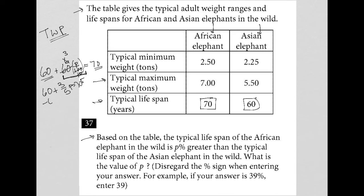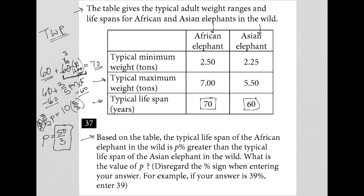I can then subtract 60 from both sides of this equation, leaving me with 3 over 5p equals 10. I can then multiply both sides by the reciprocal of 3 fifths so the fraction disappears, leaving me with p. And I get 50 over 3. So there's my answer: 50 thirds. You can turn that into a decimal if you like, but I'm going to leave it as a fraction: 50 over 3.